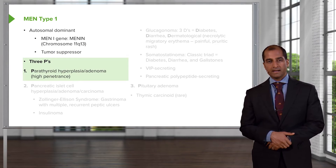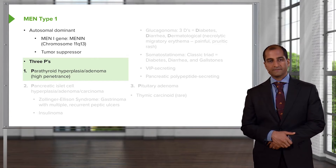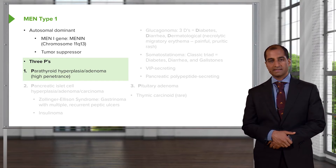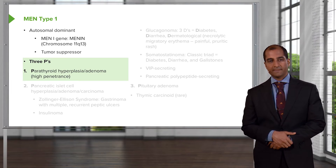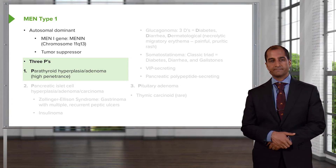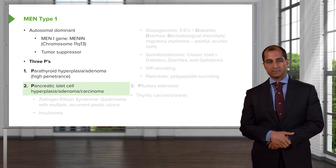The three P's for MEN type 1 — go in alphabetical order: pan, para, pit. The 'para' would be hyperparathyroidism resulting in increased calcium, or hypercalcemia.